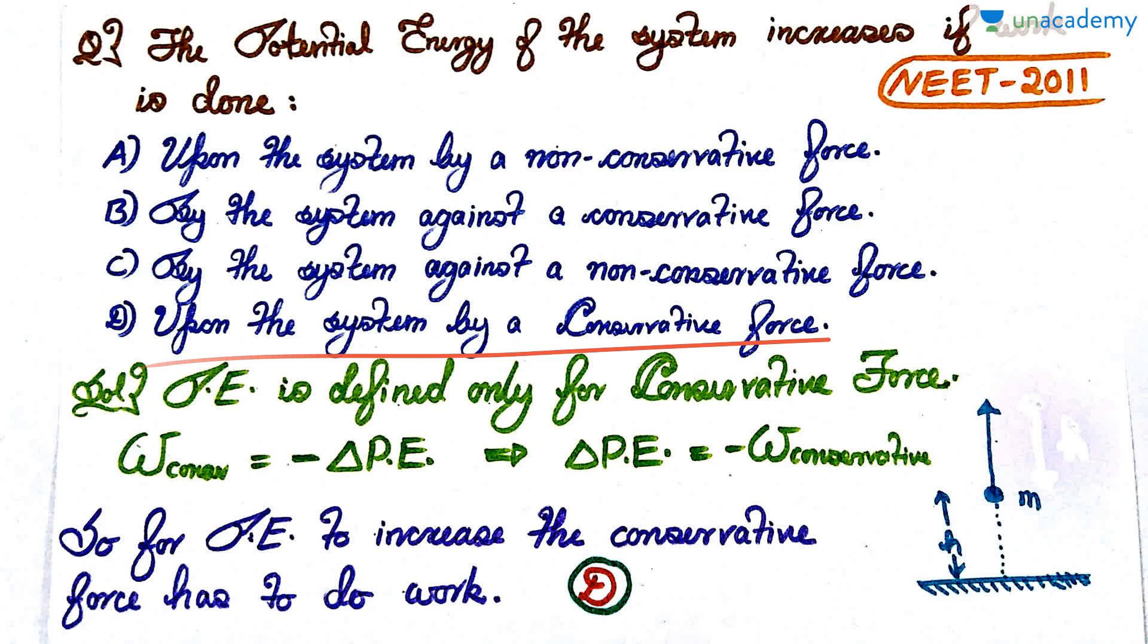It's a very straightforward question but can be a little confusing. You can simply ignore options A and C because non-conservative forces are there. Potential energy is defined only for conservative forces, so what conservative forces are doing is what matters. We know that work done by conservative force is negative of the change in potential energy. So ΔPE = -W_conservative. If the potential energy has to increase, the work done by the conservative force has to be negative.